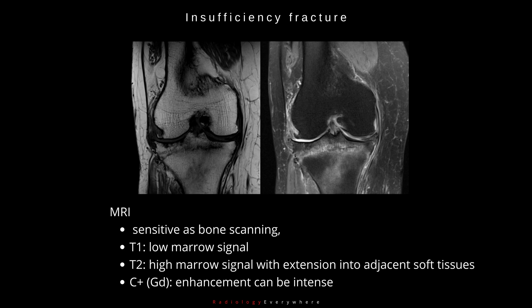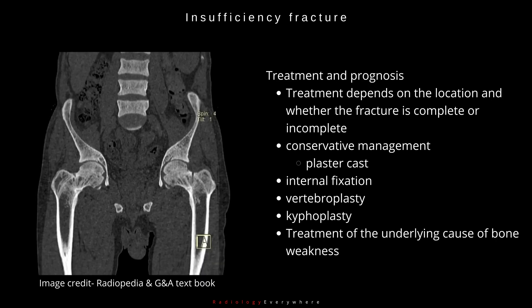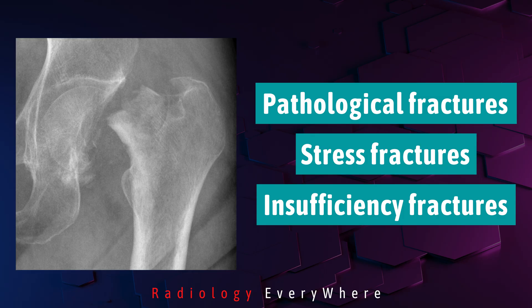These MRI signal changes extend into the adjacent soft tissues. On contrast-enhanced MRI sequences, you can see intense enhancement. With nuclear medicine, there is increased activity at the site of fracture. Treatment and prognosis of insufficiency fractures depends on the location and completeness of the fracture — management can be conservative with plaster cast, or involve internal fixation, vertebroplasty, or kyphoplasty, and treatment of the underlying cause of bone weakness.